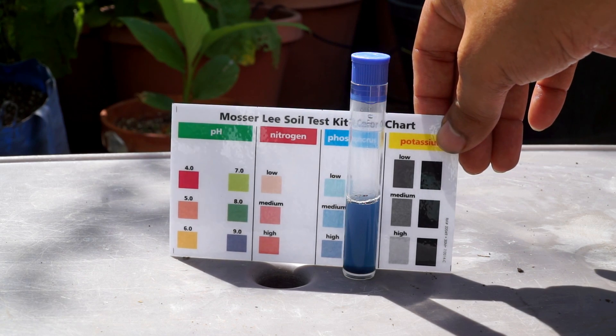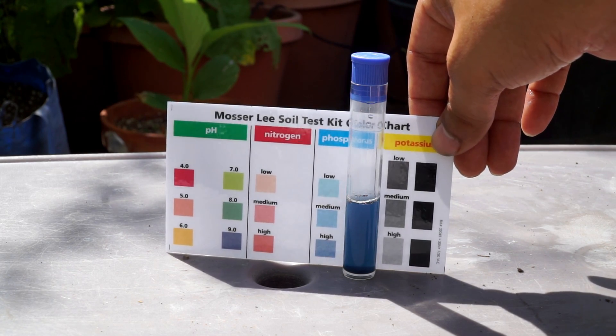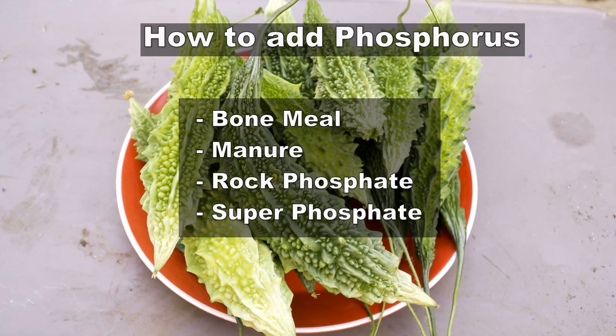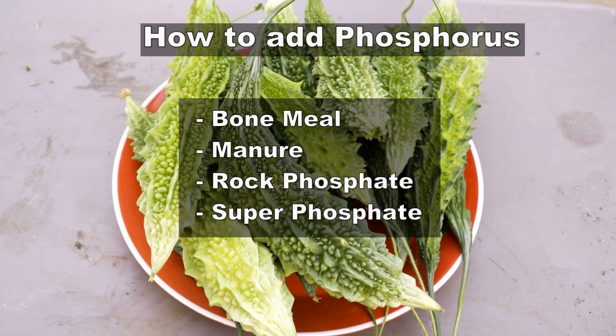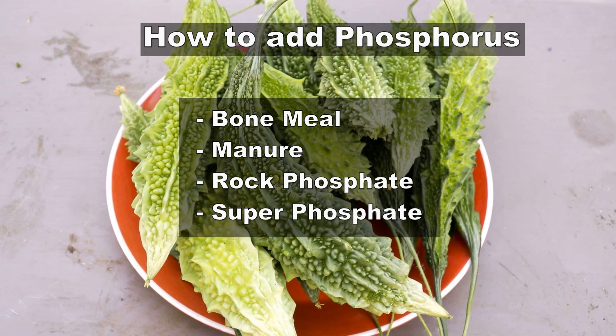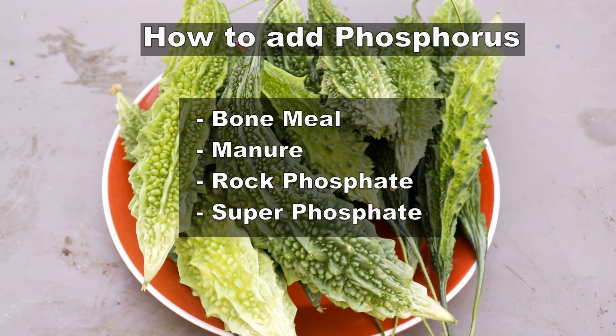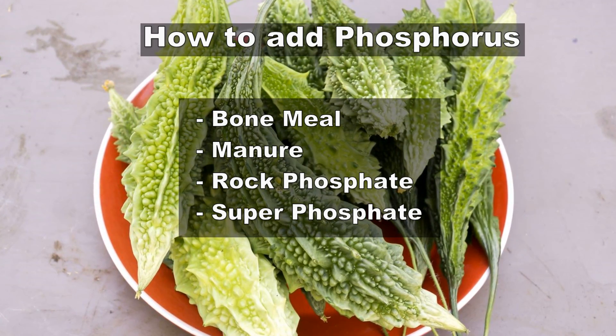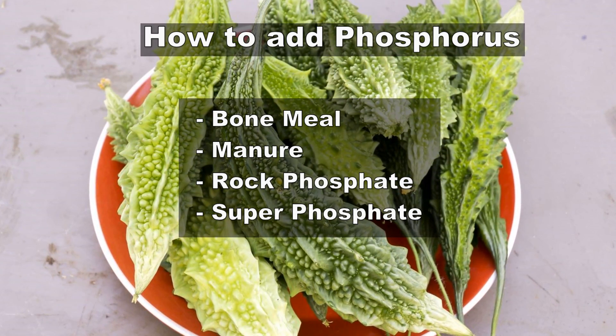You can see here the chart now corresponds to phosphorus that's quite high, so our soil is really not deficient in phosphorus in this case. Remember that you need to test soil from various locations in your garden to arrive at any conclusion. If you do find your soil deficient in phosphorus, which is essential for flowering and producing bulbs, you need to make sure that you either add bone meal, manure, rock phosphate, or super phosphate. Once again, whether you use organic sources or not is entirely up to you.